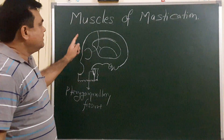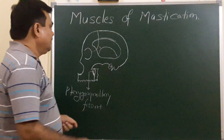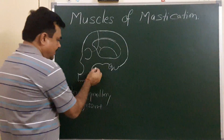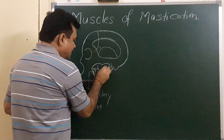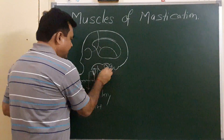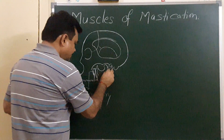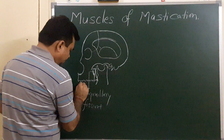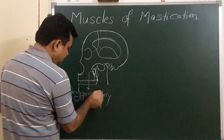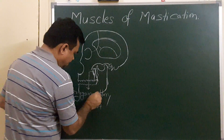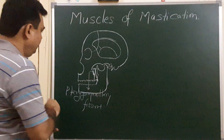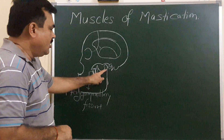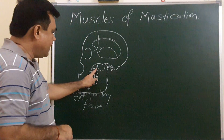We'll discuss the muscles of mastication. First we'll discuss the temporalis muscle. Here is the mandible, this is the mandible. Here is the coronoid process of the mandible and this is the condyloid process of the mandible.